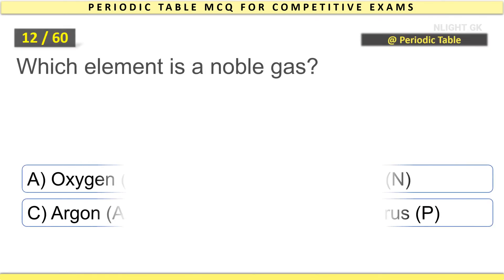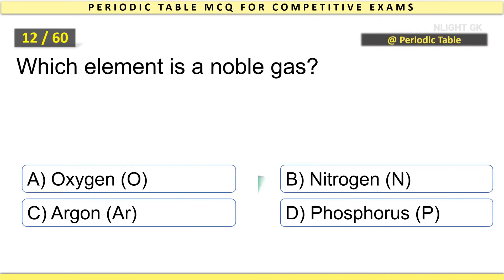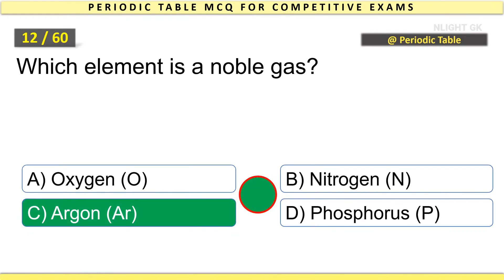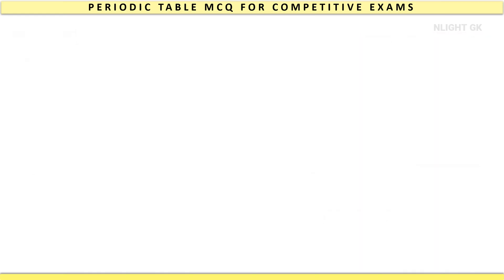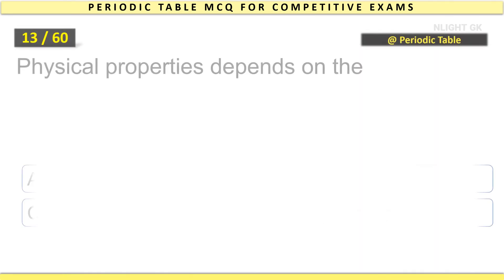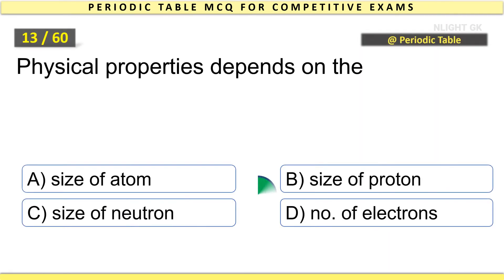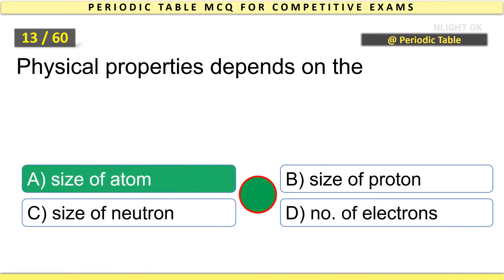Which element is a noble gas? Argon. Physical properties depend on the size of atom.